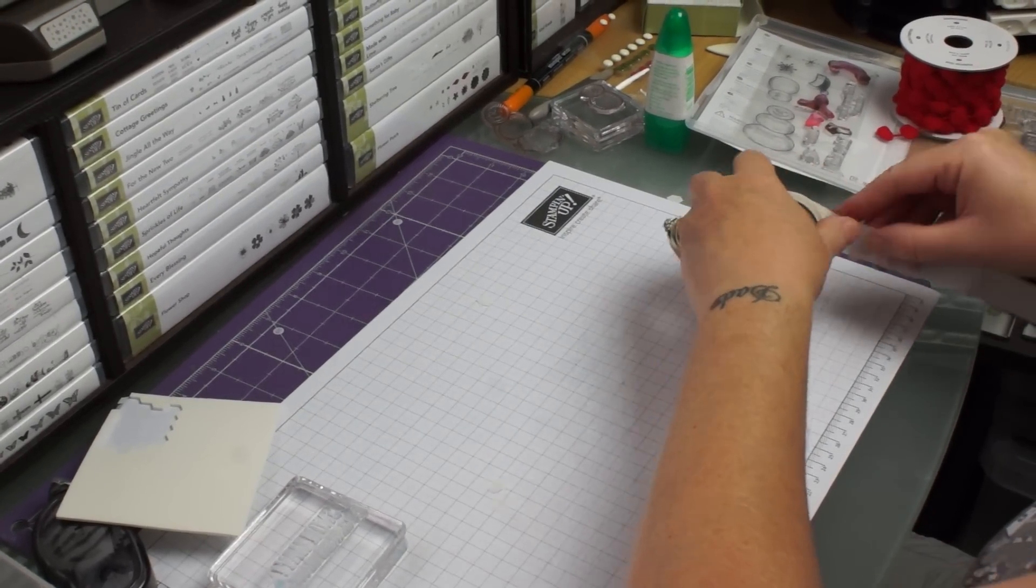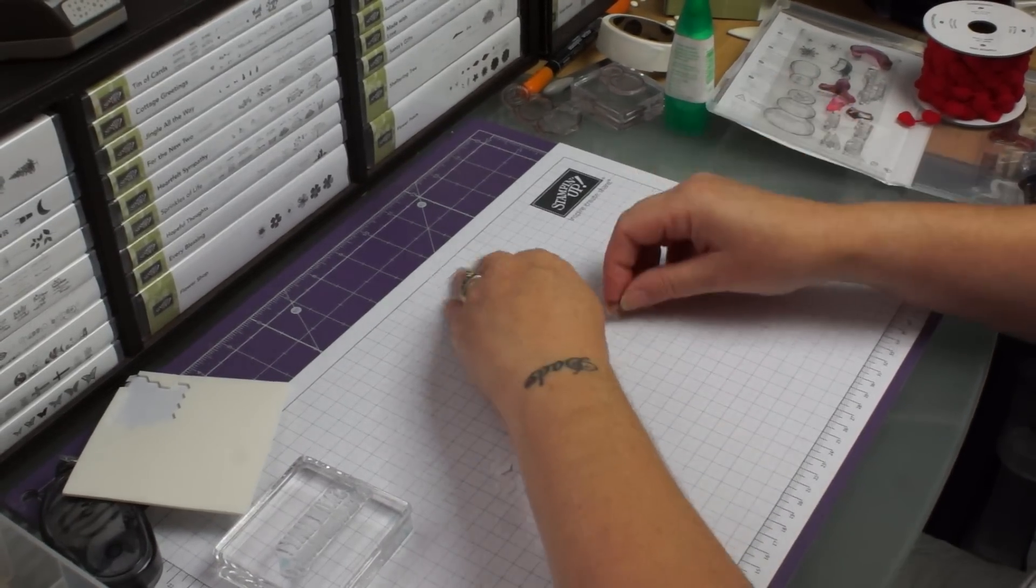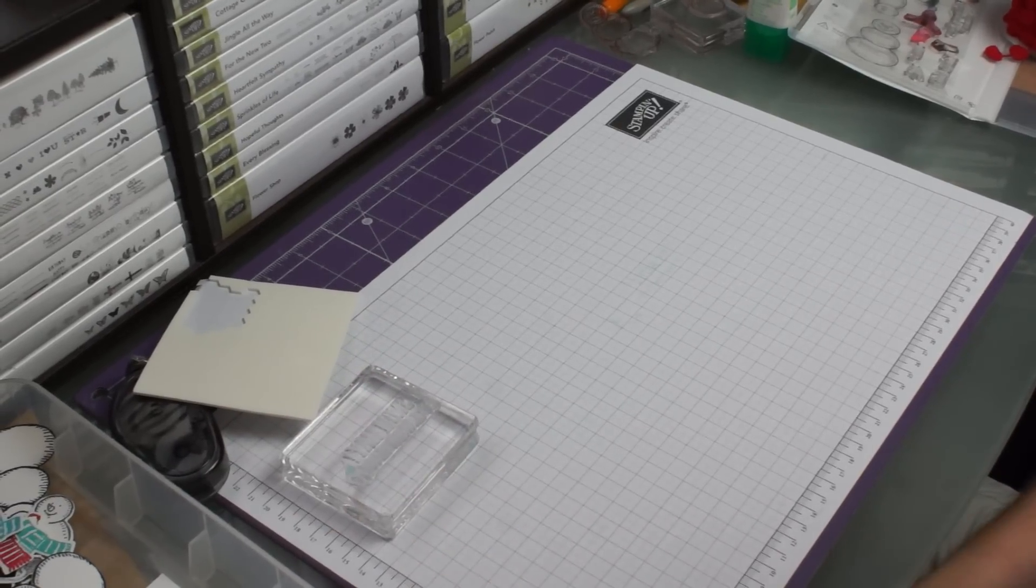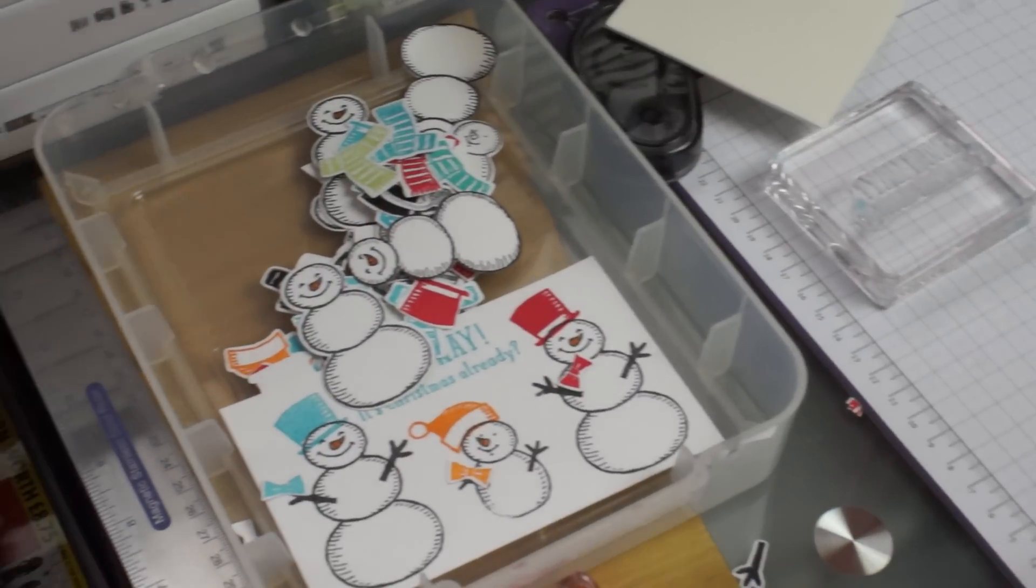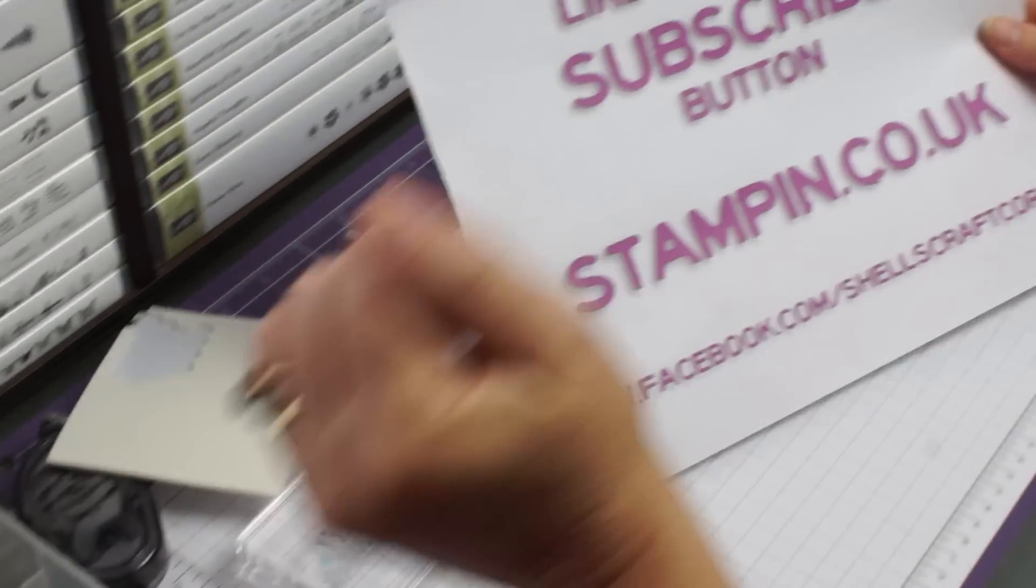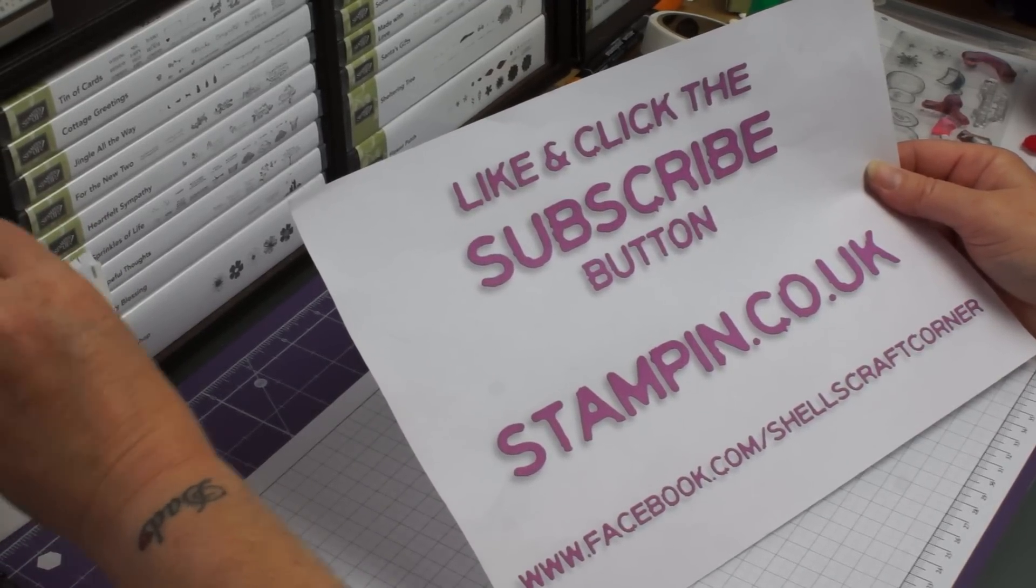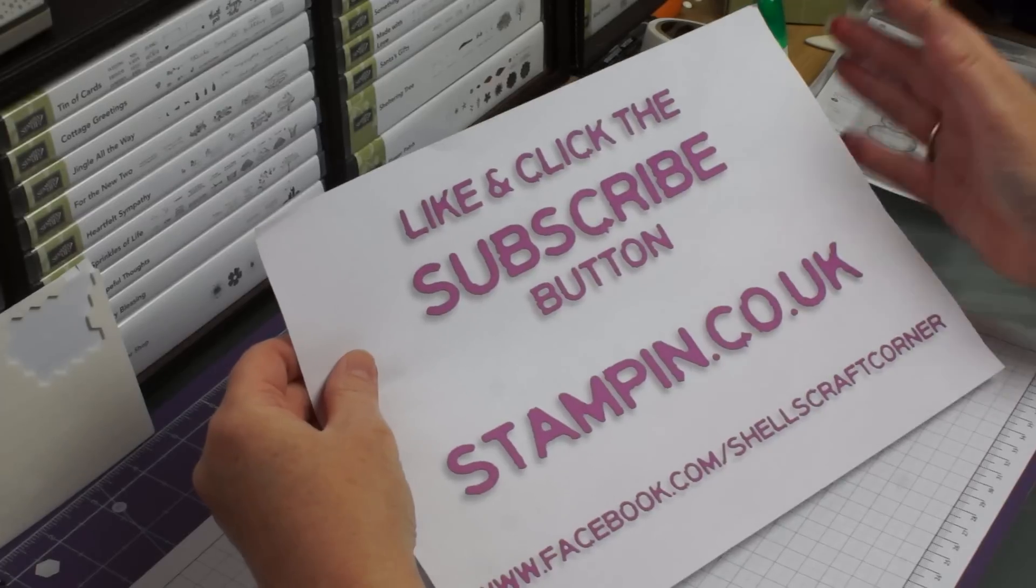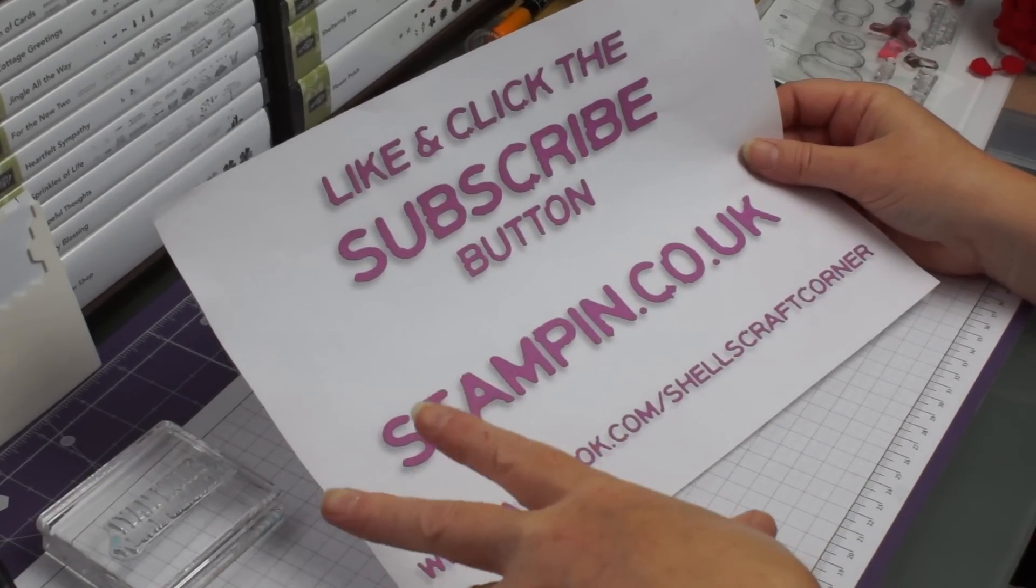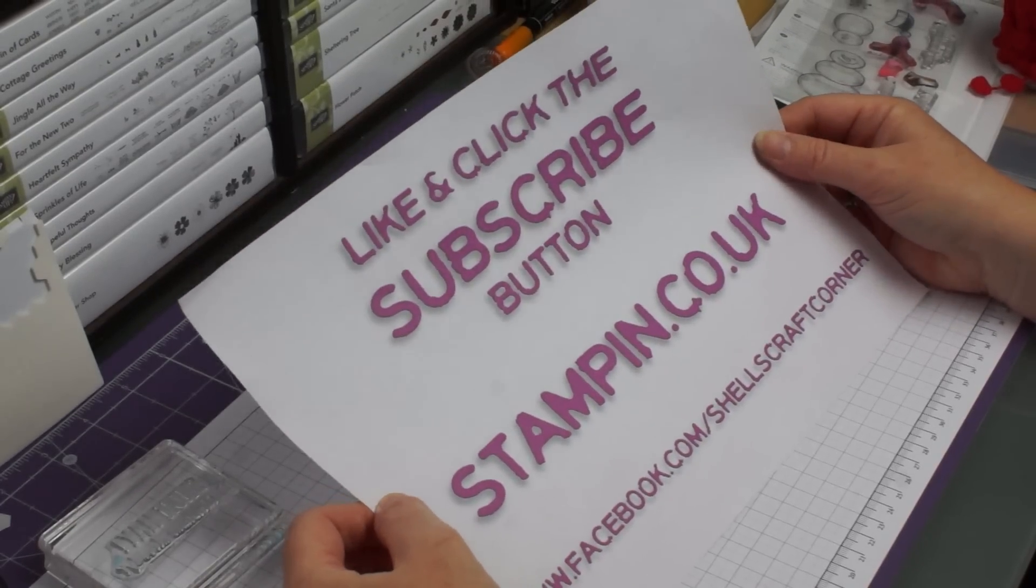Before I go today I'd just like to mention again for those of you that haven't heard already, I'm doing an all day craft event at Woodlands in Doncaster South Yorkshire on Saturday October the 10th. You can still book a place, we still have places. So if you'd like to contact me for details on that I'd love to hear from you. You can do that by contacting me on my Facebook page at Shells Craft Corner. I'd love you to like and click the subscribe button so next time I upload something you'll be able to see it. If you'd like a list of all the products I've used today, all the dimensions of my cards, stamp sets, ink, you'll find them on stamping.co.uk and you'll also find them at Shells Craft Corner on Facebook. Thank you for coming along today and see you soon bye bye.